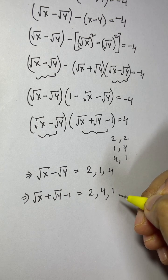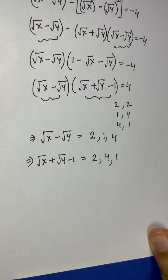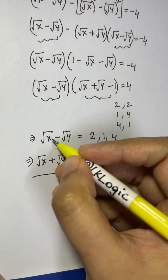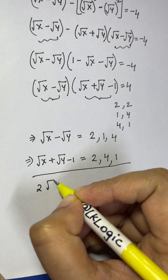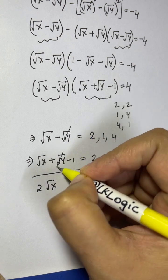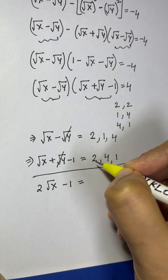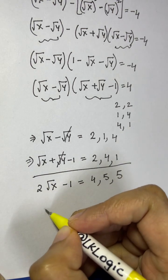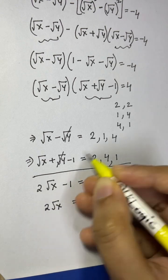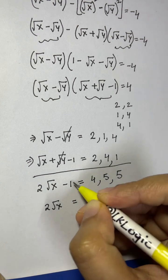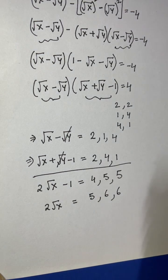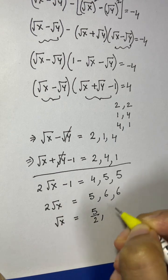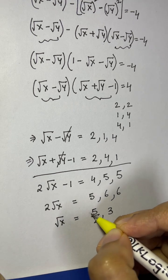Adding the two equations in each combination: 2 root x minus 1 equals 4 plus 1, giving 2 root x equals 5, so root x equals 5 over 2 — a fraction. Or 2 root x minus 1 equals 6, giving root x equals 3. Since x and y must be integers, root x equals 5/2 is rejected. Therefore root x equals 3.